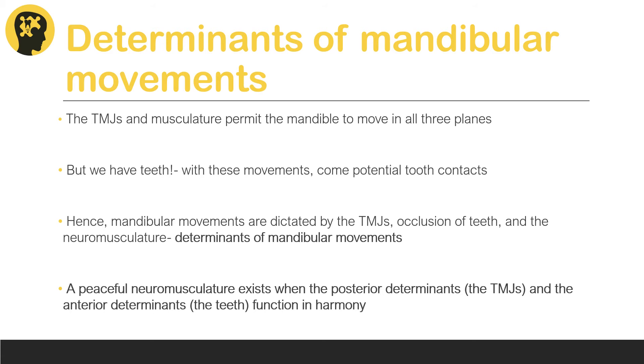But let's not forget a very important third component, which are the teeth themselves. As the mandible goes through these different movements, the anatomy of the teeth also help guide these mandibular movements. We can say that mandibular movements are dictated posteriorly by the TMJ and the muscles—the posterior determinants—and anteriorly by the teeth, which are the anterior determinants.